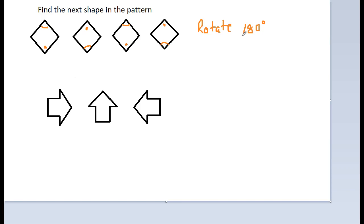Let's look at this one. We have an arrow pointing to the right, then it is pointing up, and then it's pointing to the left. Each one is a rotation 90 degrees but it's going counterclockwise.